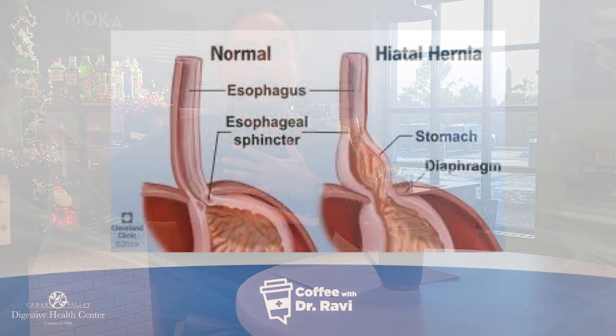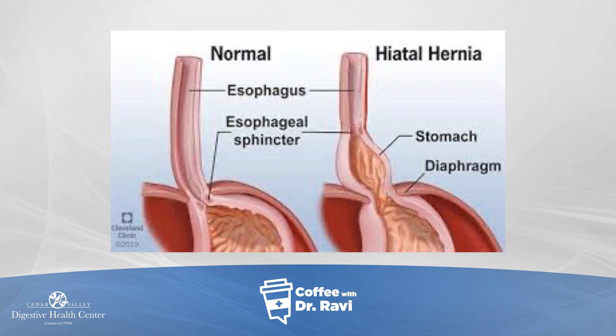A hiatal hernia is a condition where a portion of the belly enters into the chest. The chest is up here, the abdomen or belly is down here, and there's a layer of muscle between both called the diaphragm. You can see it on that graphic on the screen, where you see the esophagus, which is a tube going down, and right here is the diaphragm.